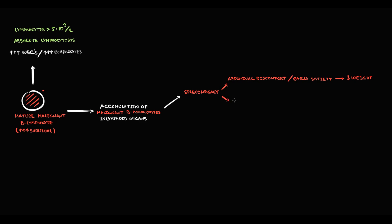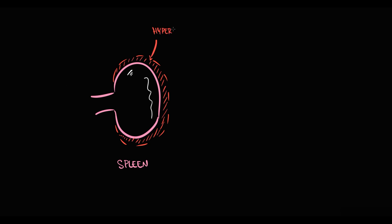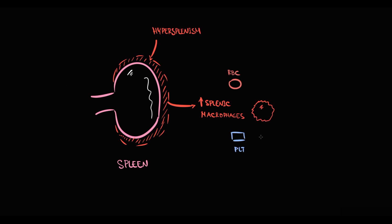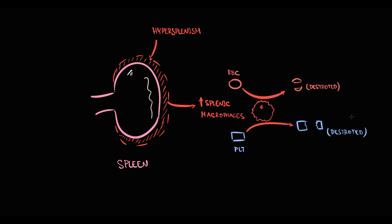Another serious problem is that at some point the spleen becomes so large that hypersplenism develops. The concept is that the larger the spleen becomes, the more reactive splenic macrophages become. At some point, enlargement of the spleen causes over-stimulation of macrophages, and they begin to consume by phagocytosis even normal red blood cells and platelets, resulting in their destruction. So the more severe CLL becomes, the larger the spleen, and the higher the chance that splenic macrophages will cause premature destruction of red blood cells and platelets.